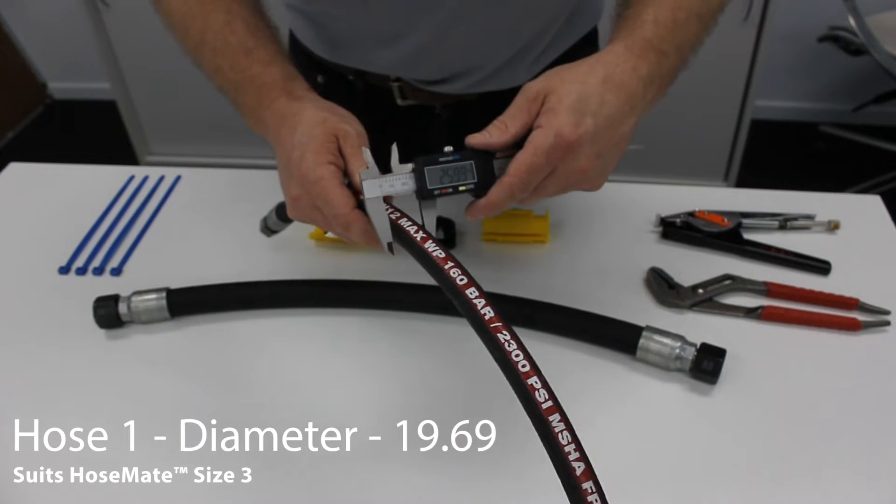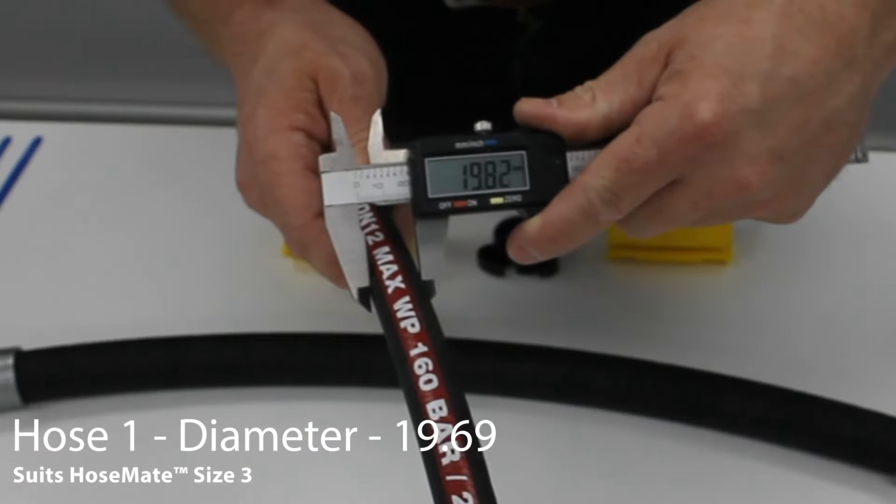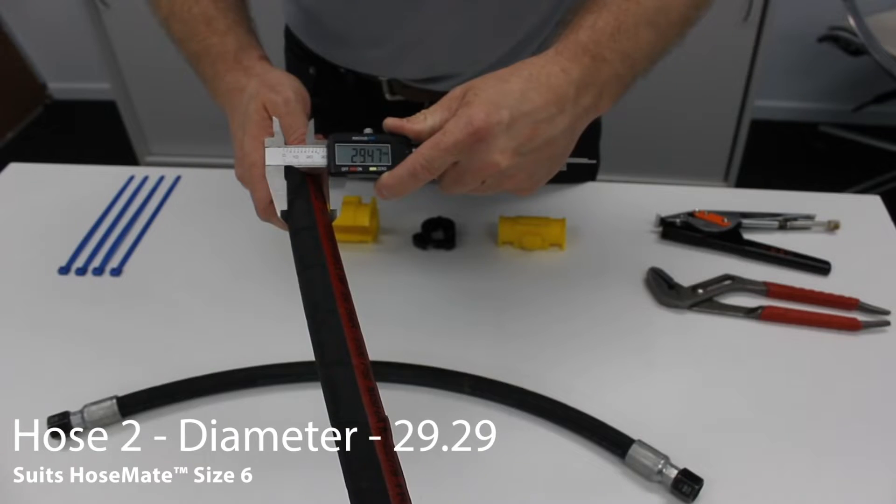To begin, measure the outside diameter of your hose. Don't assume an outside diameter is correct based on the ID.